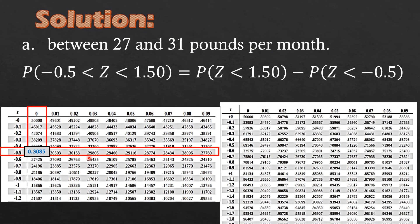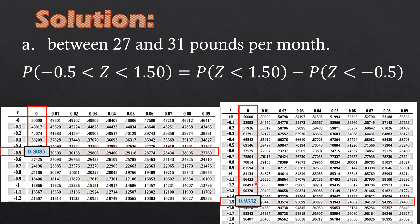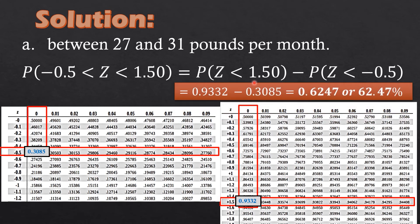From the positive z-table for 1.5, with second decimal 0, the intersection is 0.9332. Subtracting: 0.9332 minus 0.3085 equals 0.6247, or 62.47 percent.